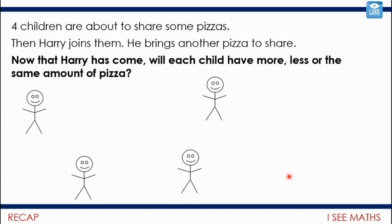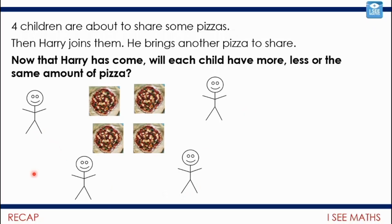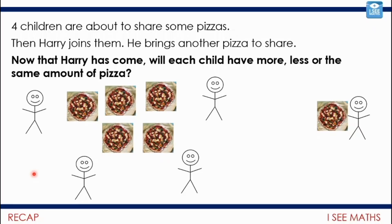Now for yesterday's extension task: four children are about to share some pizzas, then Harry joins and brings another pizza. Will each child have more, less, or the same? If they had four pizzas — one each — and Harry brings one more, there's still one each, so no change. But if they had five pizzas between four, that's more than one each. When Harry adds his pizza, it's five pizzas between five children — they still get one each, but the extra pizza is now split into five parts, so each person gets less than before.